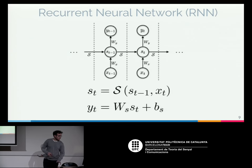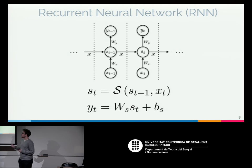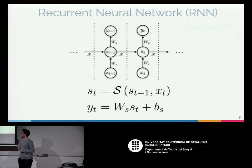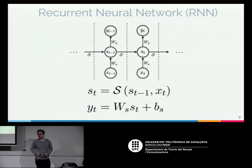Now we will give an overview of adaptive computation time. First, consider a very simple recurrent neural network. A recurrent neural network processes a sequence of inputs — at each step it receives an input, processes a state and an output. The state depends on the last state, and the output depends on the current state. These are similar to the equations of a dynamic system.